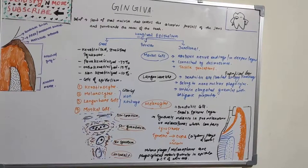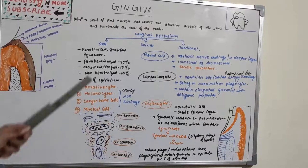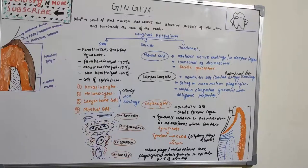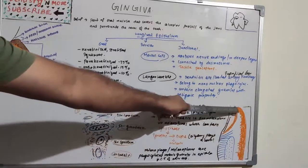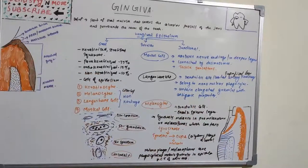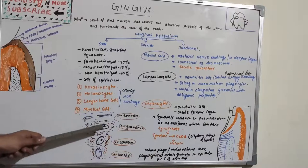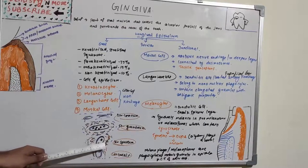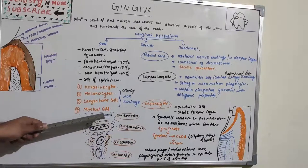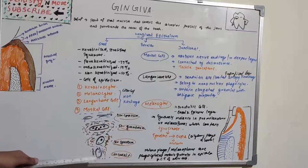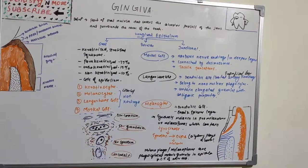Moving on to the various epithelial types in gingiva: oral epithelium, sulcular epithelium and junctional epithelium. Oral epithelium is keratinized. Keratinized means we have four layers of epithelium: stratum basale, stratum spinosum, stratum granulosum and stratum corneum. The level of keratinization increases as it goes higher. The basal layer has cell multiplication and as it goes higher, more keratinization happens. Oral epithelium is basically keratinized, stratified and squamous in nature.